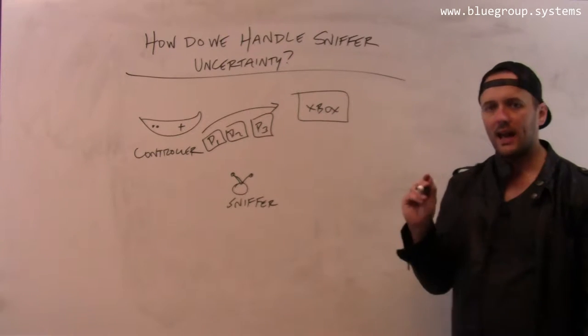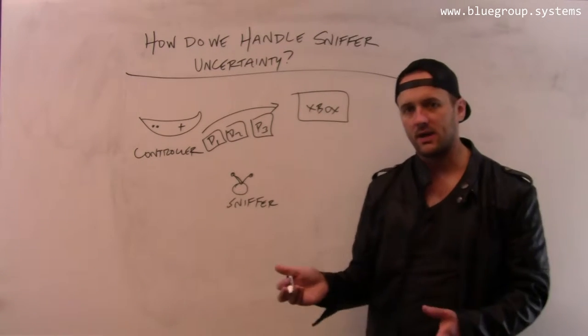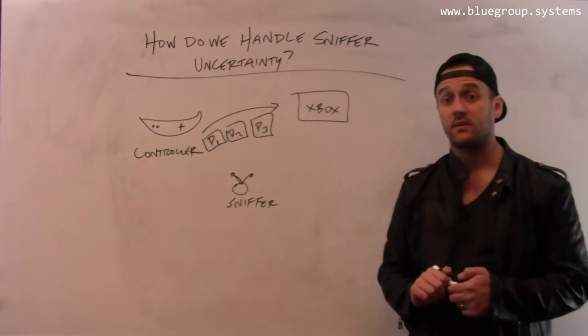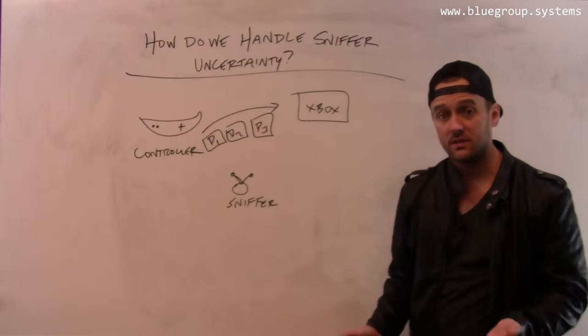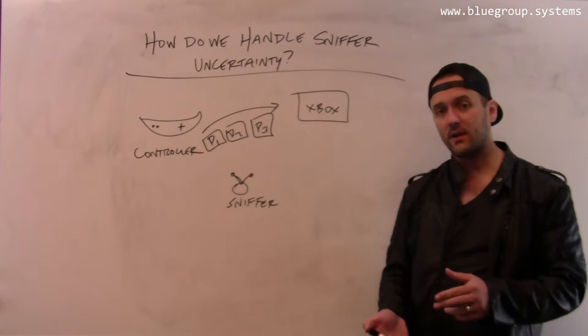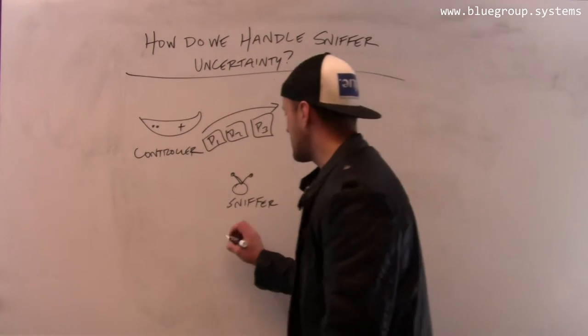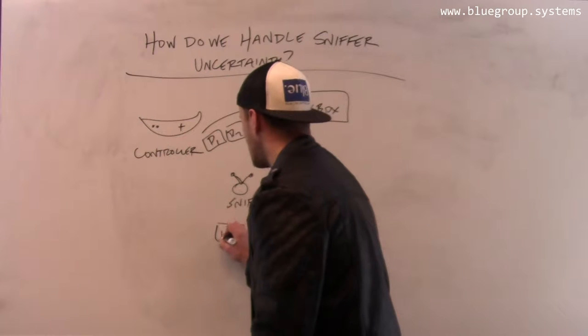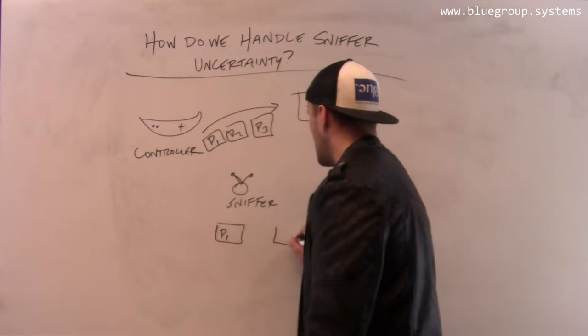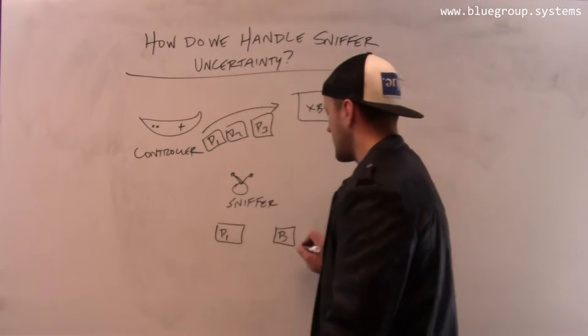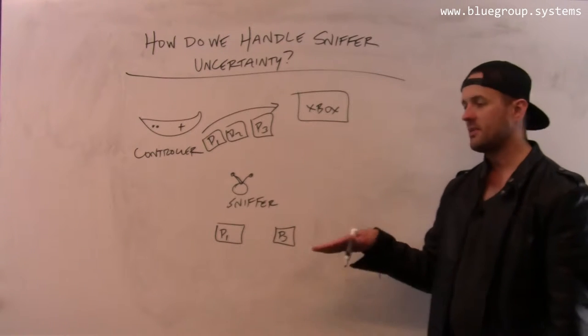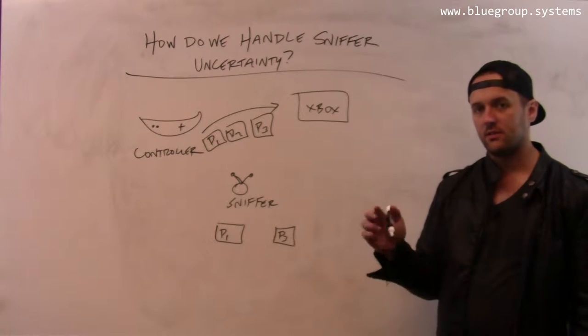Now, the sniffer does not have a perfect view of the wireless environment. Wireless propagation is always fraught with uncertainties. It's possible that there's interference, it might miss the start of frame delimiter or something, and so it's possible that the sniffer only sees P1 and P3.